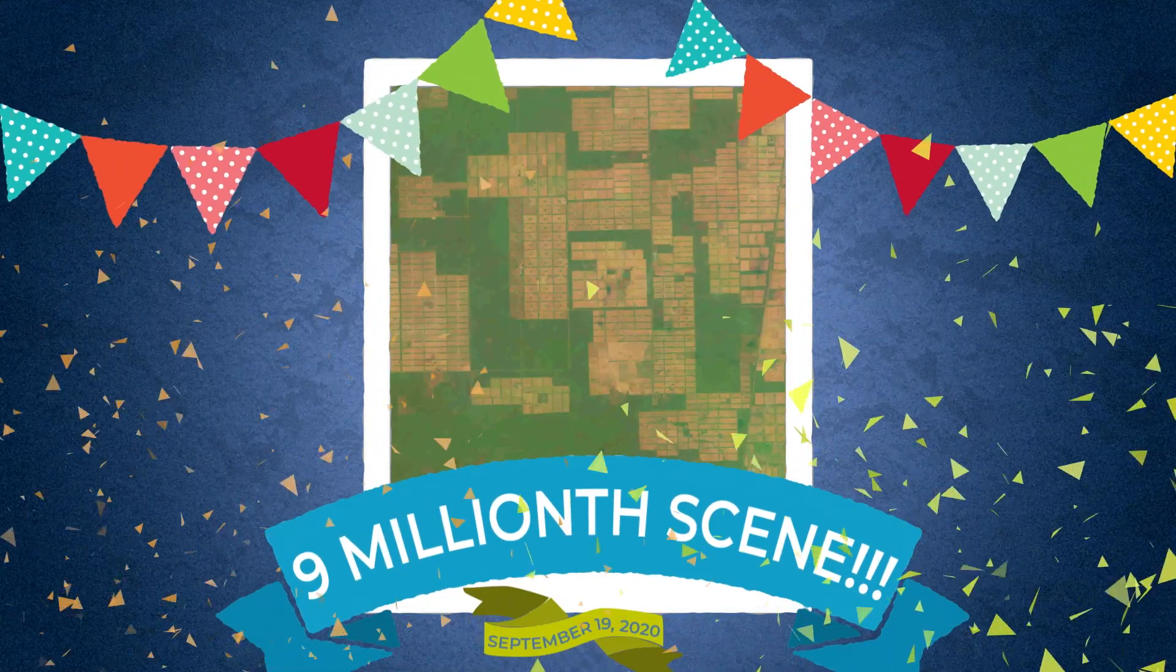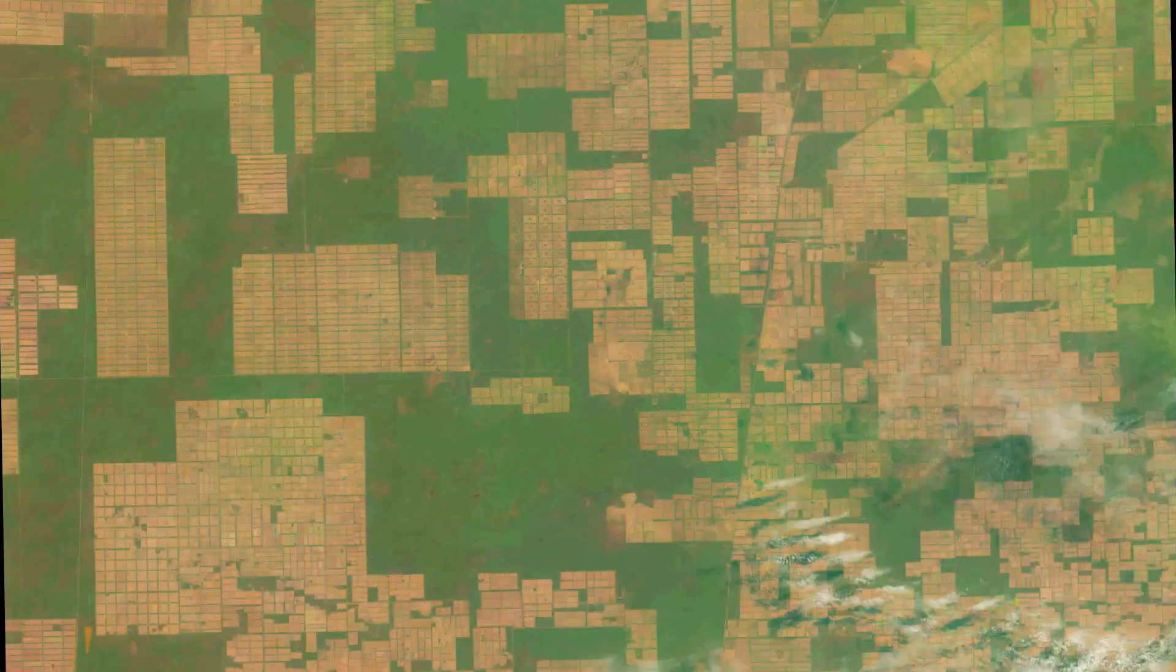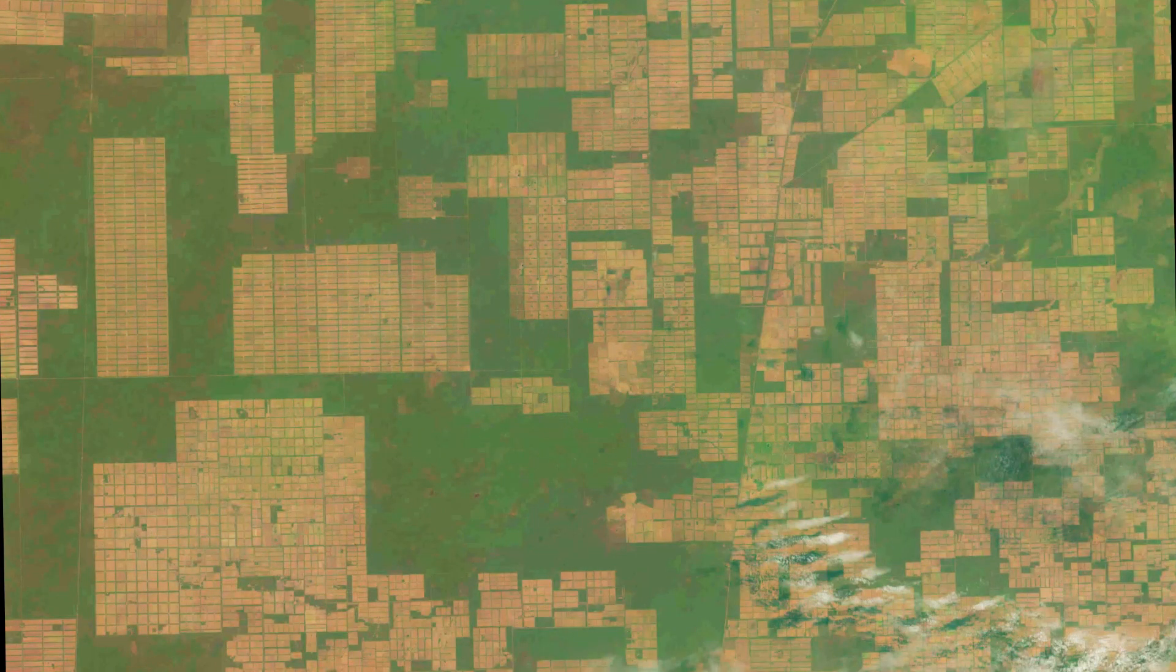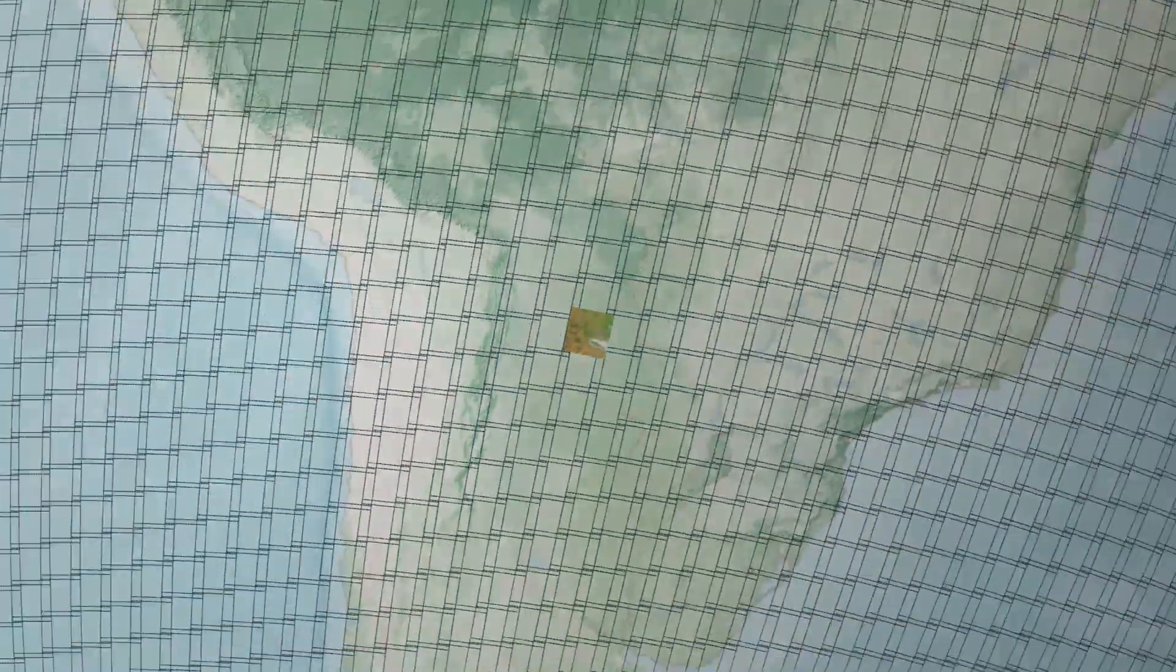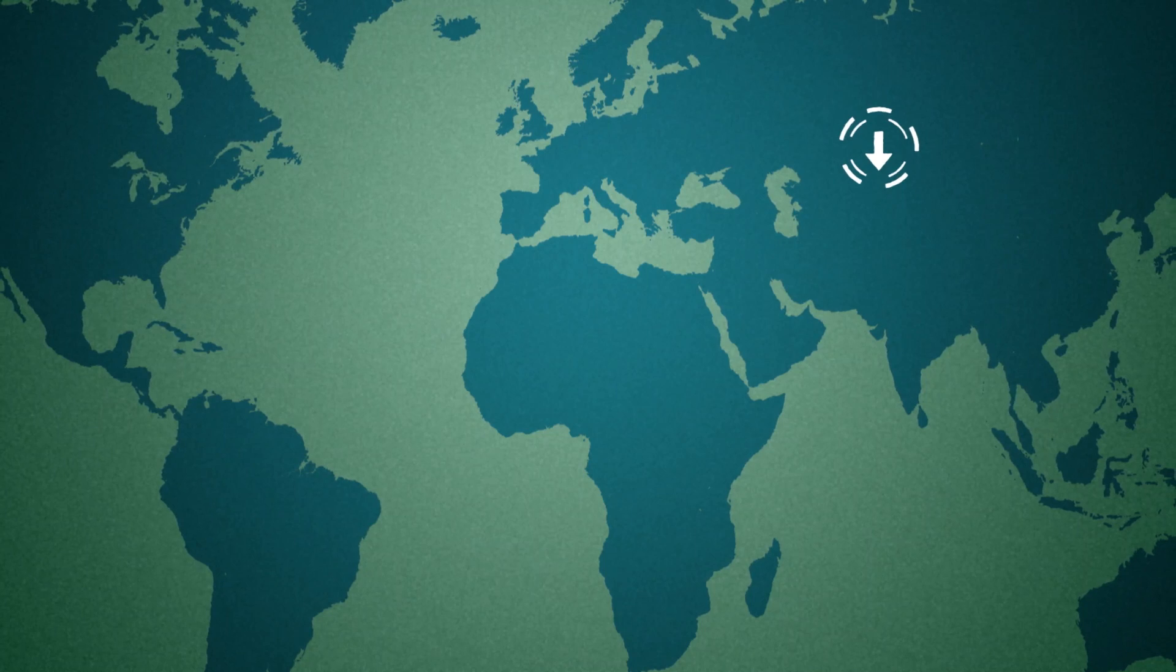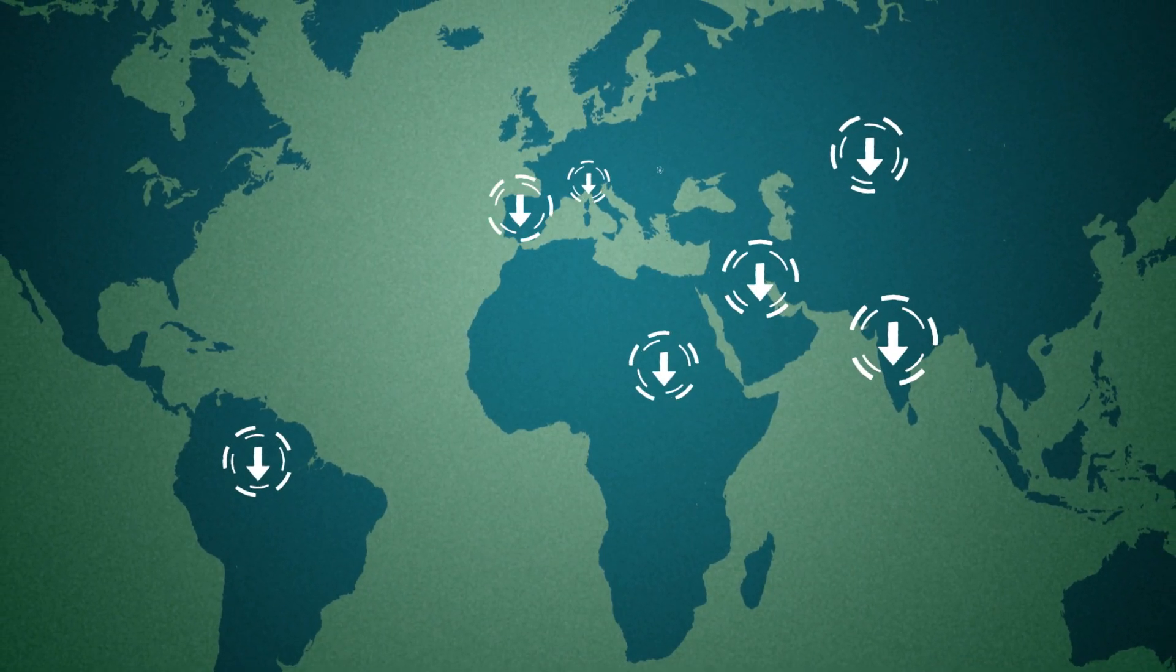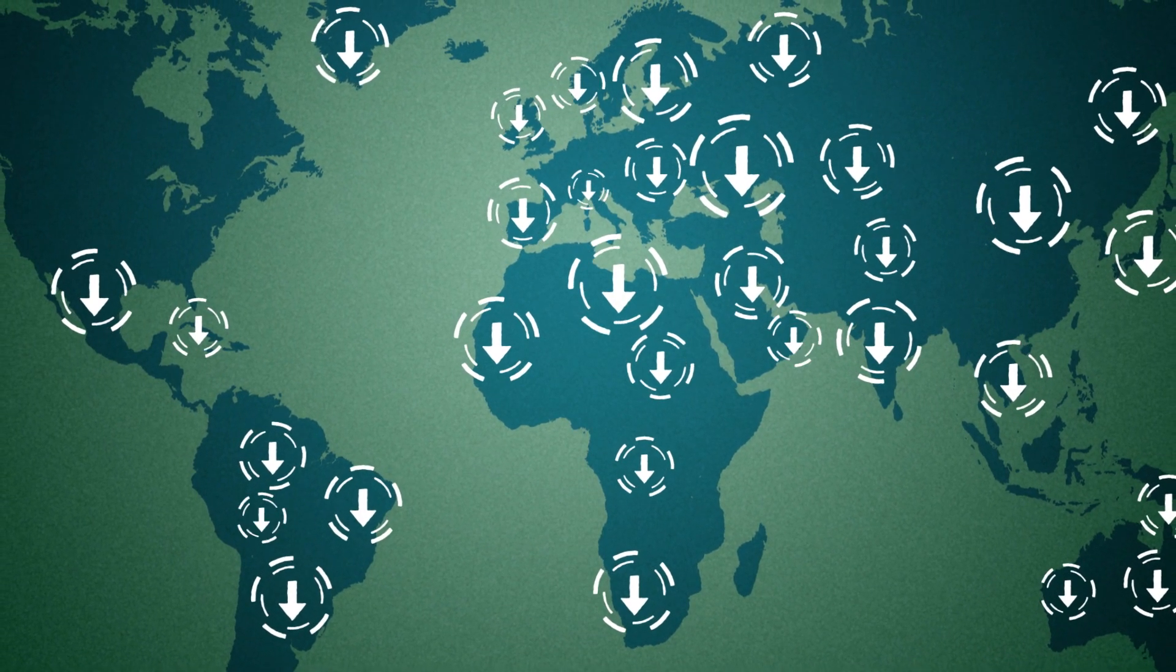Landsat archives its 9 millionth scene. Each scene is a satellite image from space, about 115 miles wide. Researchers and just about anyone can download scenes from the Landsat archive managed by USGS.